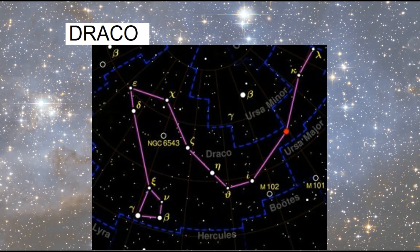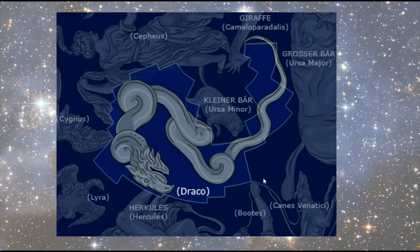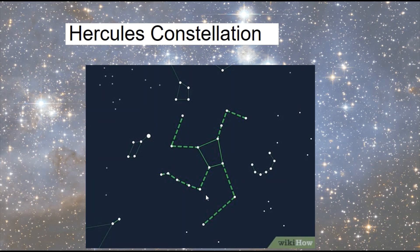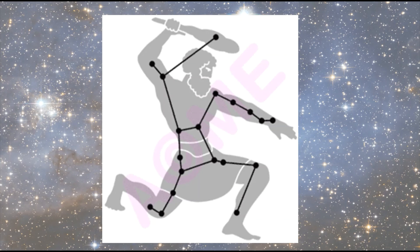I want you to pause the video and think about what animal or object you can see in this constellation. The correct answer is Dragon — because look at the name: it's Draco, and Draco means dragon. What about this one? This is the Hercules constellation, and of course it depicts the famous character Hercules from Greek mythology.